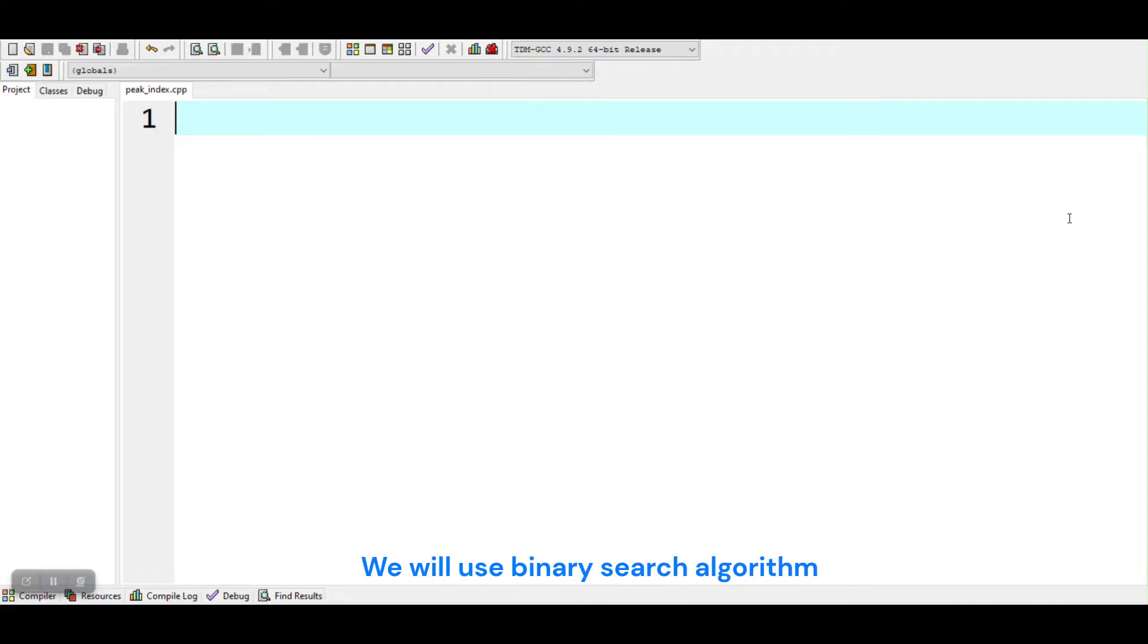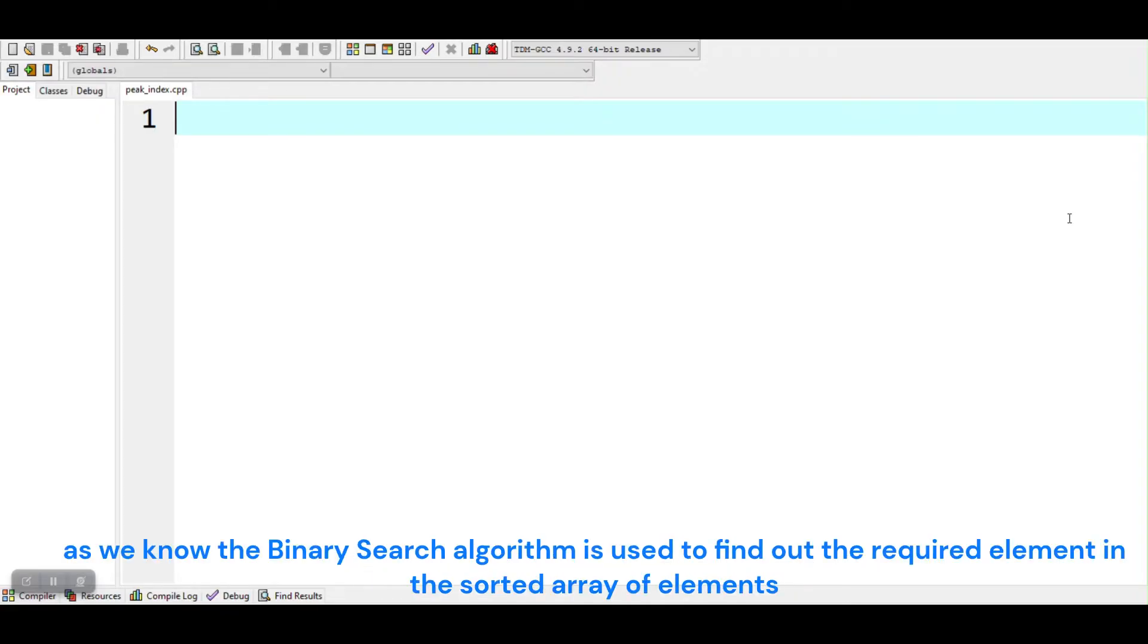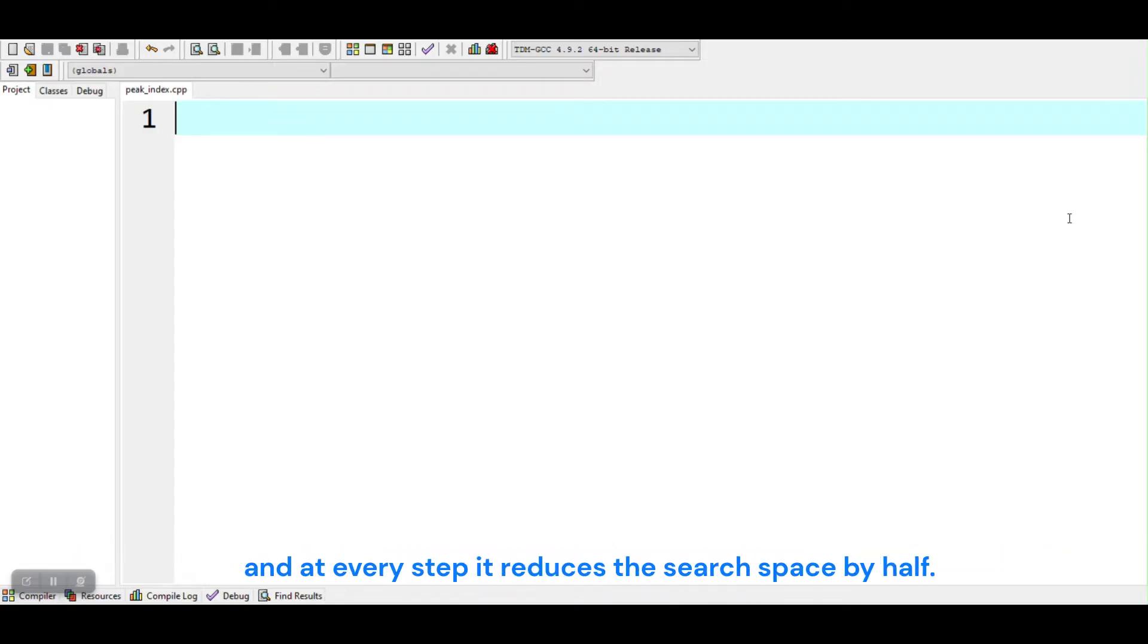We will use binary search algorithm. As we know, the binary search algorithm is used to find out the required element in the sorted array of elements. And at every step it reduces the search space by half.